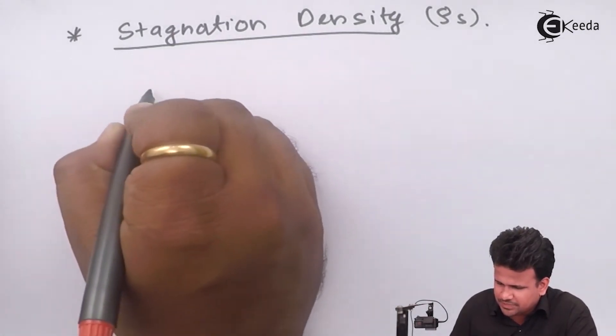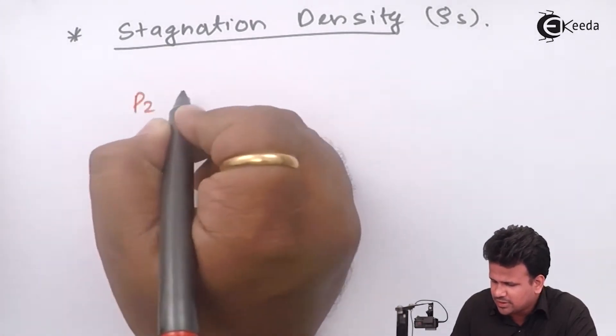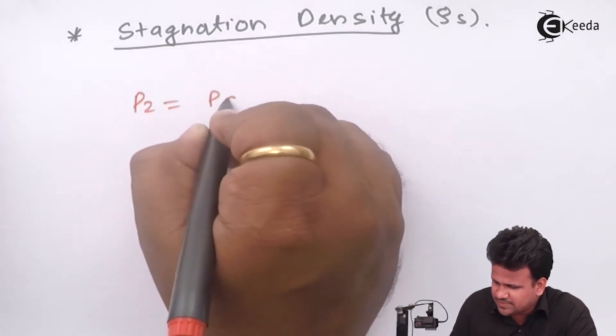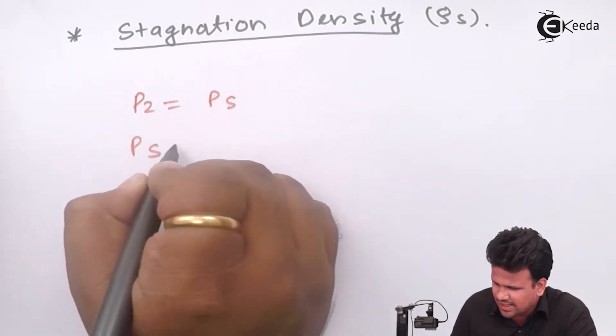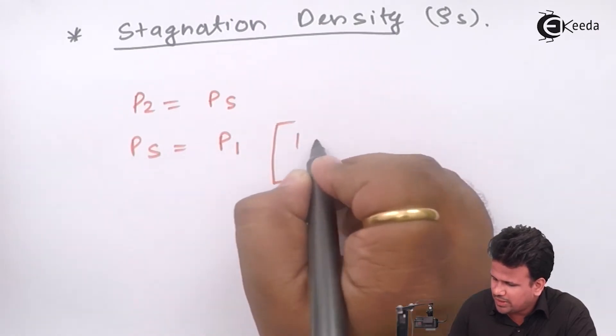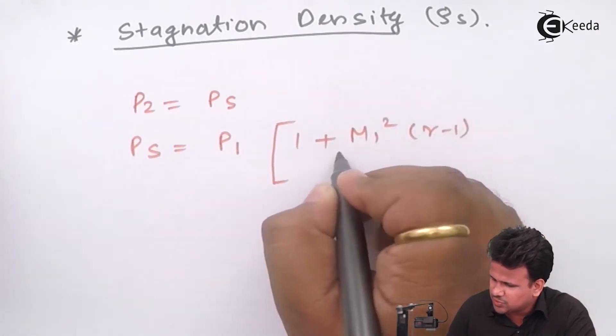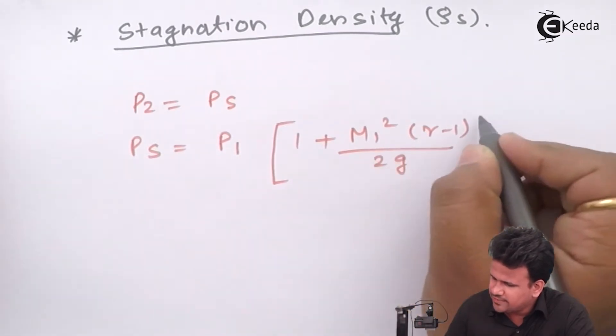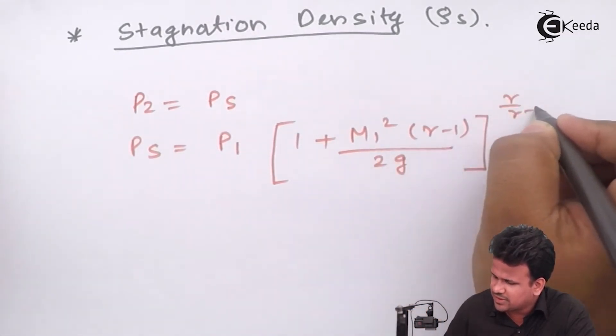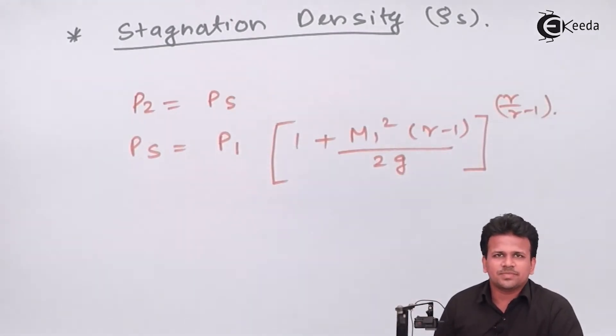We know that the stagnation pressure P2 or PS is given as PS equals P1 times [1 plus M1 squared times (gamma minus 1) upon 2g] raised to (gamma minus 1) upon gamma. This is the stagnation pressure.